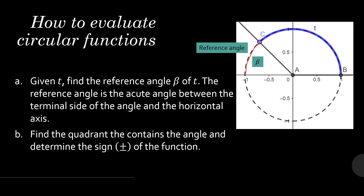Find the quadrant that contains the angle and determine the sign of the function in that quadrant. The corresponding point for an angle has a set of coordinates x, y. The cosine of T is the x-coordinate and the sine of T is the y-coordinate. The signs of x and y depend on the quadrant that contains your point.